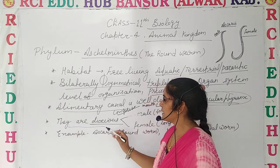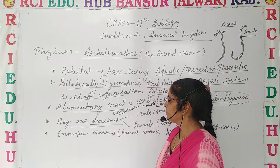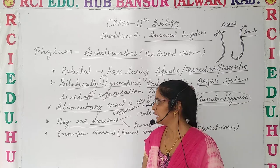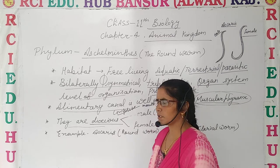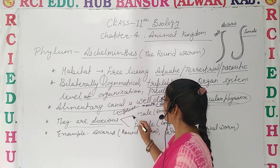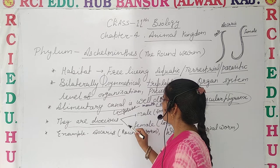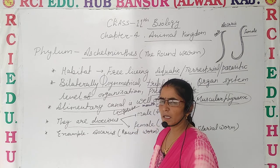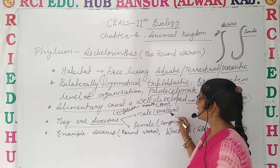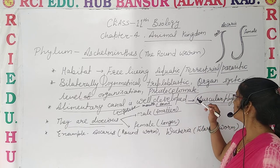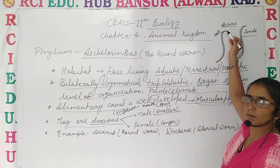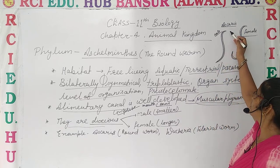Now let's discuss the nature. They are dioecious — it means the male and female are separable. The male size is smaller, whereas the female is longer. You can see this easily in the diagram.